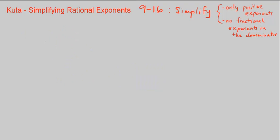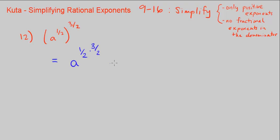Let's go on to number 12. Similarly, we can do this quickly — it's just 1 half times 3 halves, which equals 3 over 4. That's it for number 12 because it's positive and we don't have any denominator, so we're good.